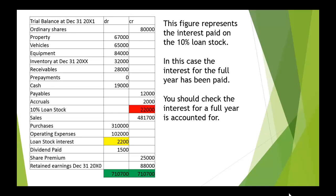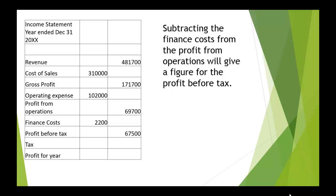What we've also got is a figure representing the interest on loan stock. Our loan stock interest is the interest on 22,000, and at 10%, that's 2,200. Now, that must represent a whole year's interest — but be careful. Sometimes it only shows a half-year interest, in which case you've got to make the adjustment so that it will include the full year. We subtract the finance costs from the profit from operations, and that gives us the profit before tax: 67,500.